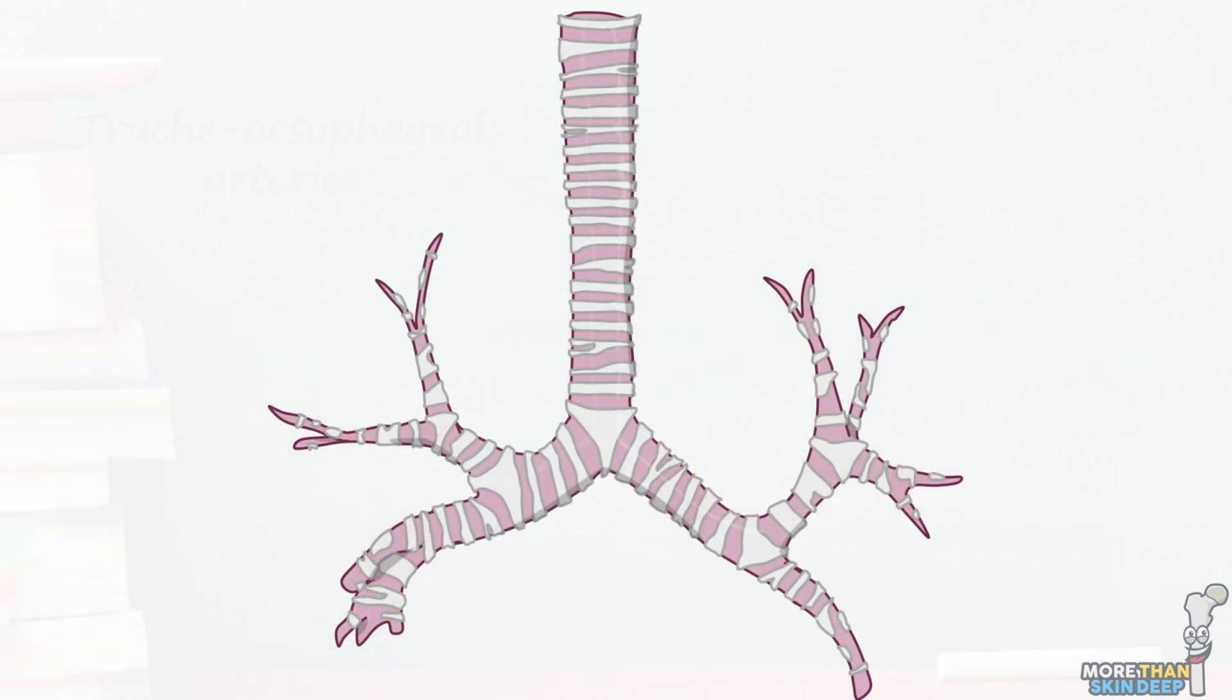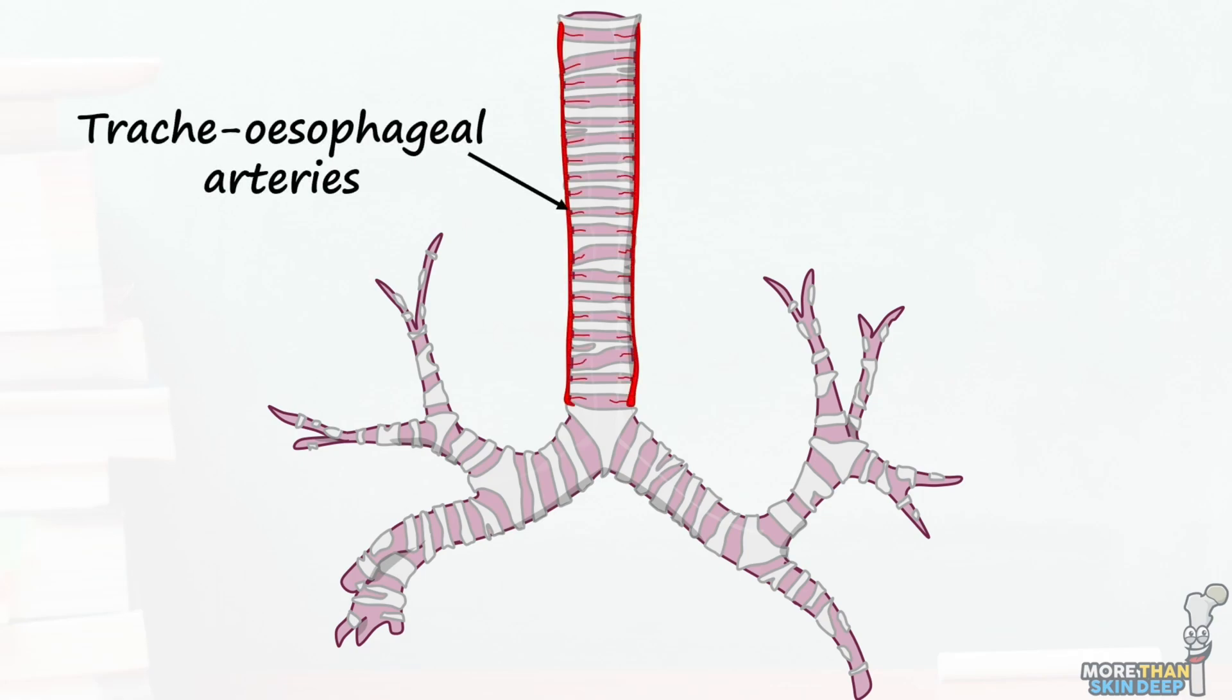Blood supply to the trachea comes from the tracheoesophageal arteries, which themselves come from the inferior thyroid and bronchial arteries.